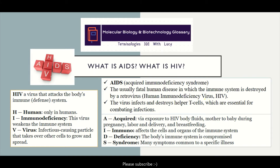HIV is the first infection — it is the virus that attacks the body's immune system. HIV stands for H, human, meaning it only infects humans. I stands for immunodeficiency, because it weakens the immune system. And V stands for virus, the infectious particle that takes over your cells and spreads within the system.